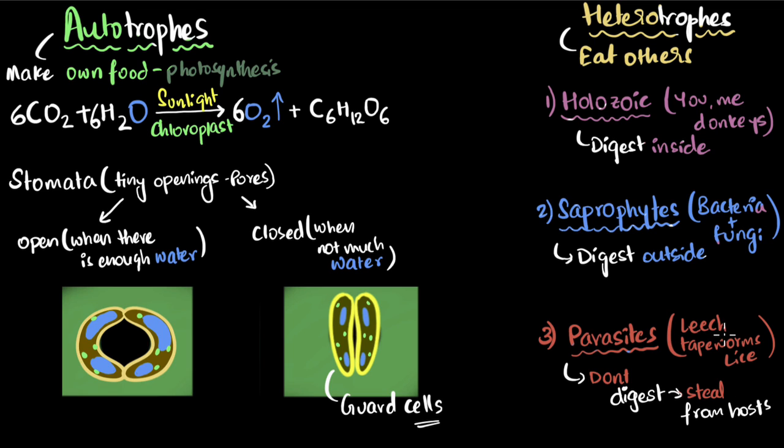For example, leeches suck our blood and just directly steal the nutrients from us. We become the hosts for them. Similarly, tapeworms and lice—they do the same thing. I used to think that parasites try to kill us, but no, they want us alive because they want us to digest food so that they can steal from us.